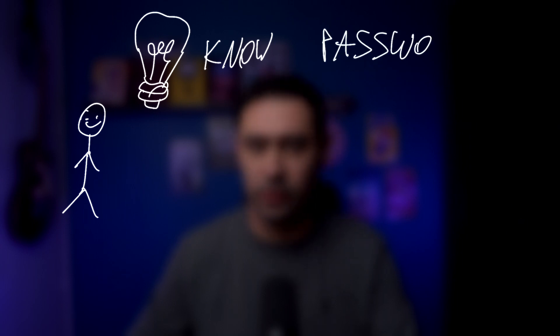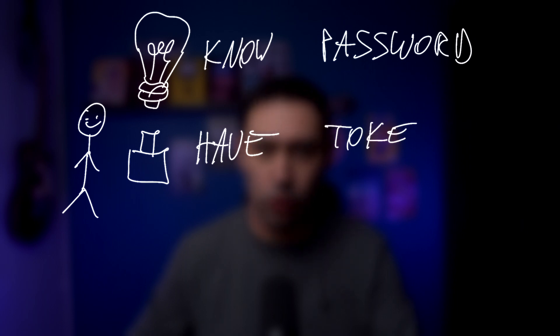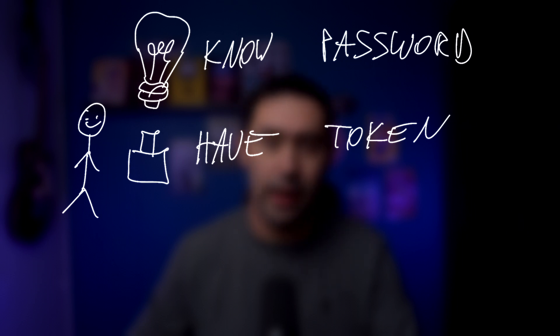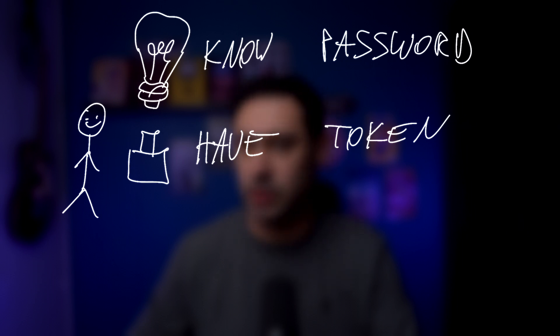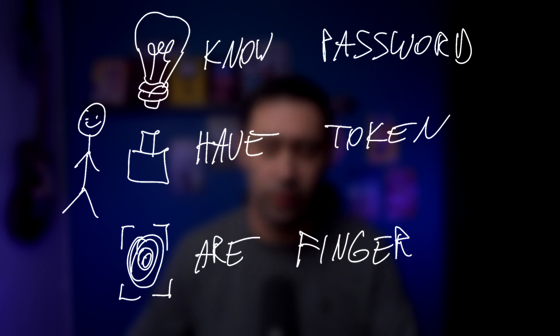There are three main categories of authentication factors. Something you know — like, for example, a password or answer to a question. Something you have — like, for example, a hardware token, authentication device, or a message sent to your mobile or authentication application. Something you are — like, for example, fingerprint, face, or voice.